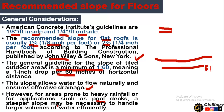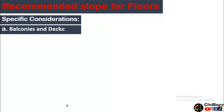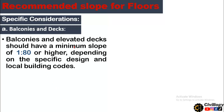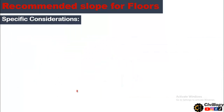For specific considerations — balconies and elevated decks should have a minimum slope of 1:80 or higher, depending on the specific design and local building codes. This slope prevents water from seeping into the underlying structure and causing damage.